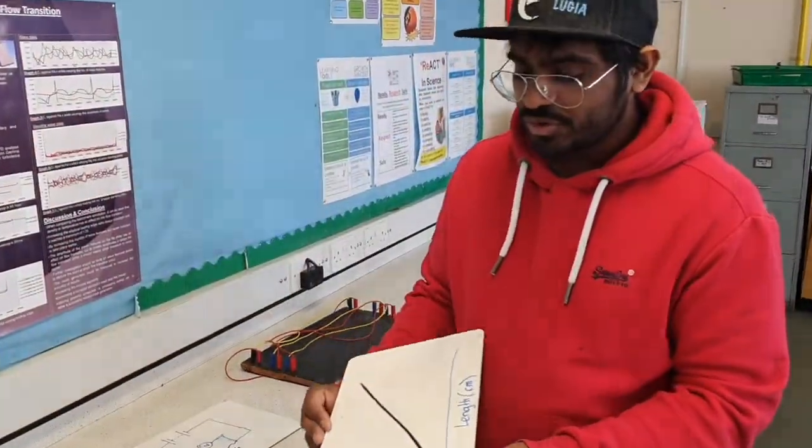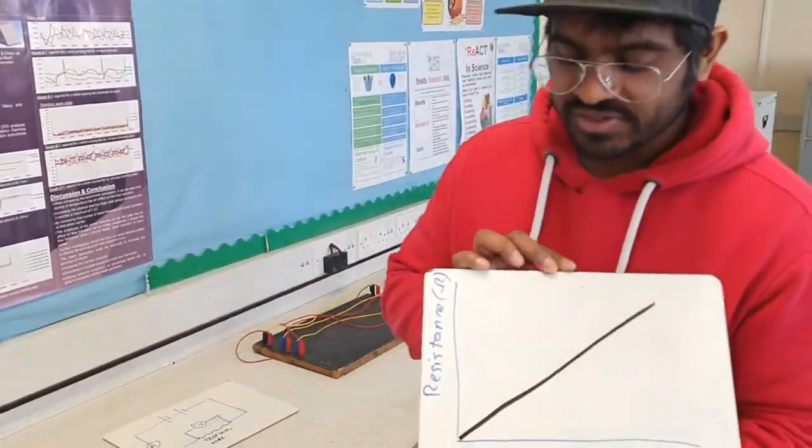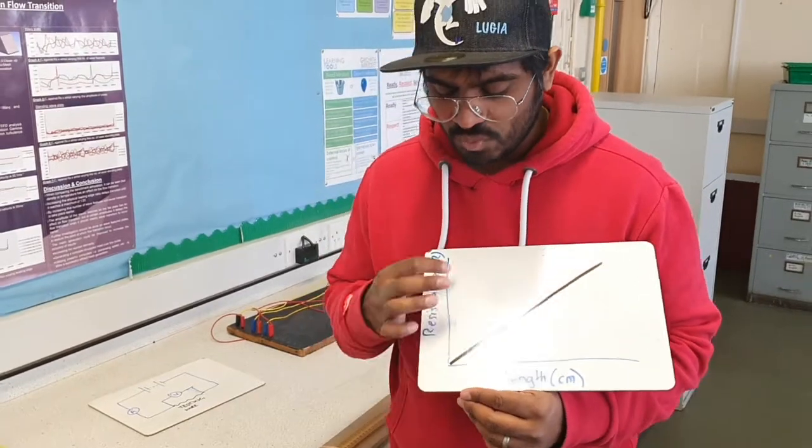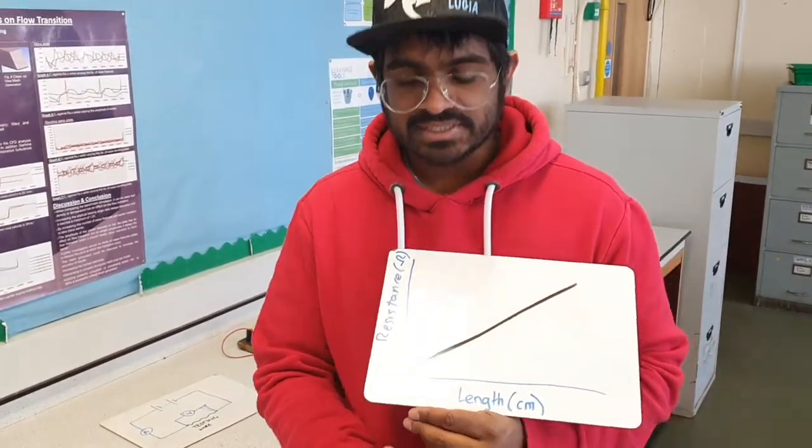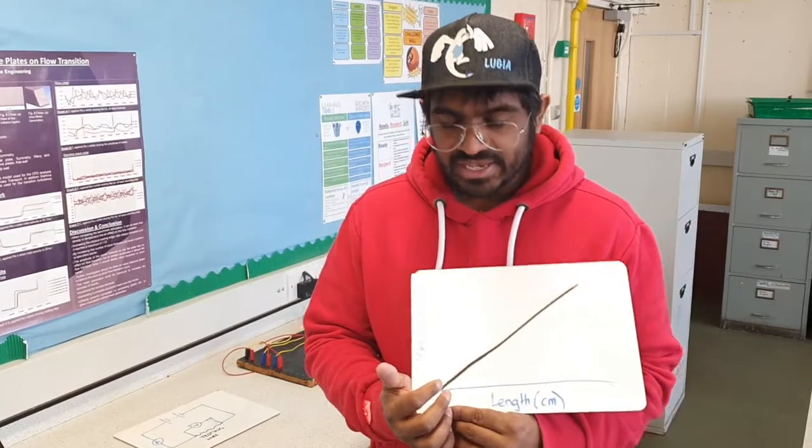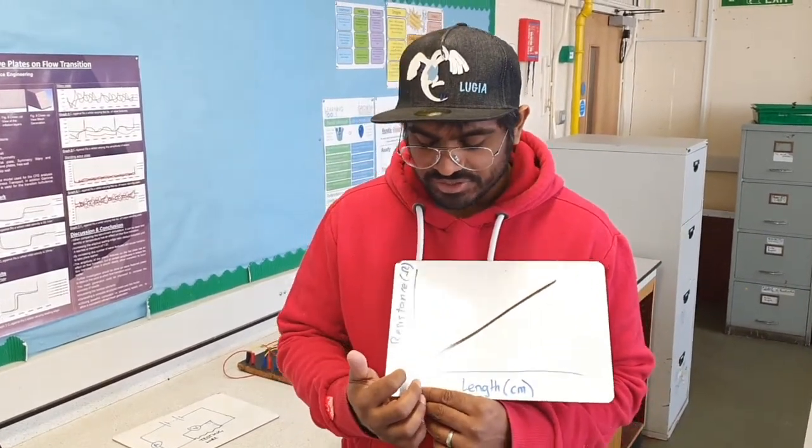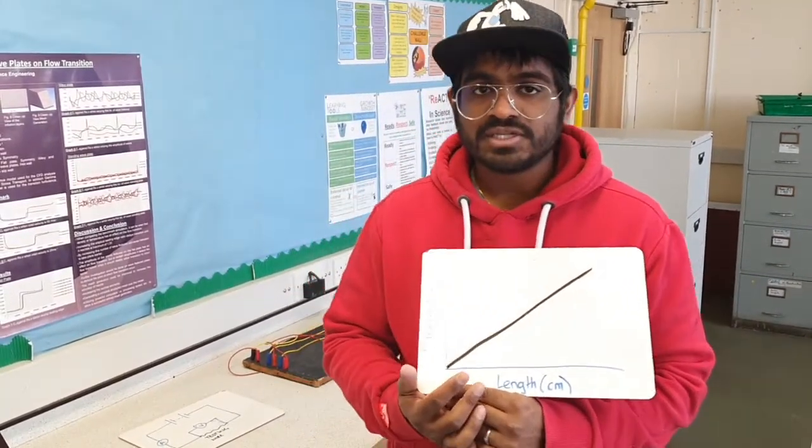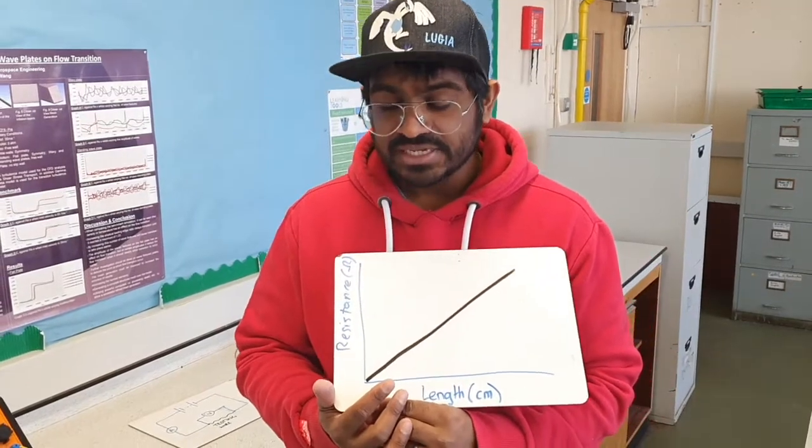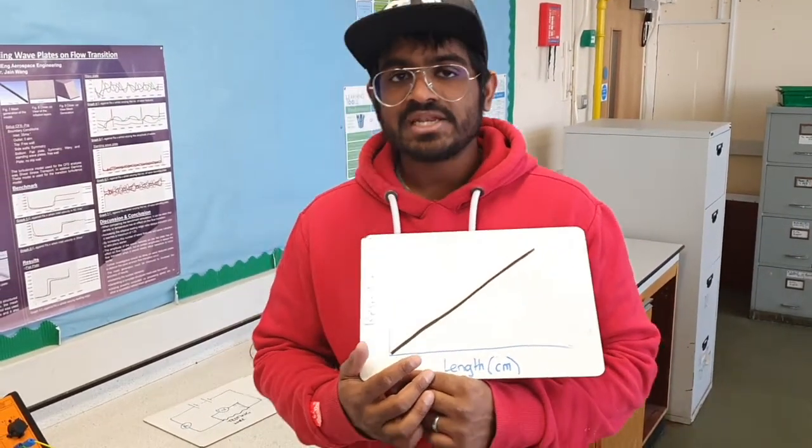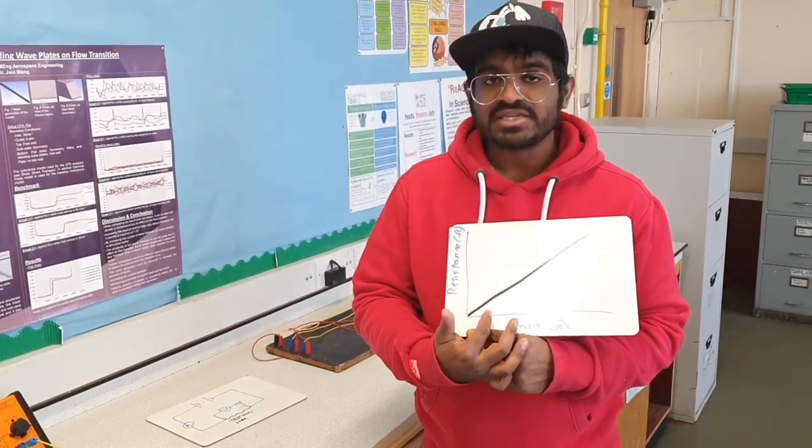With the length of the wire you're going to plot your graph and you should have something like this. You're going to have resistance on the y-axis, length on the x-axis. Make sure it's clearly labeled and you're going to have a line that's going to go straight from origin going directly up. This shows that the resistance is directly proportional to length and you can prove this by getting various data from your results.